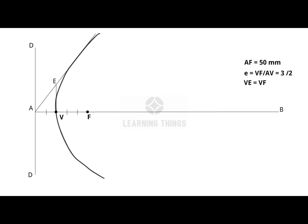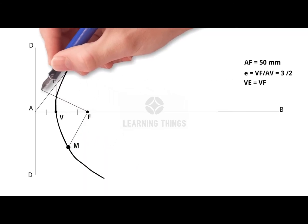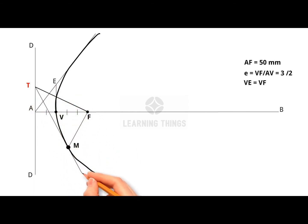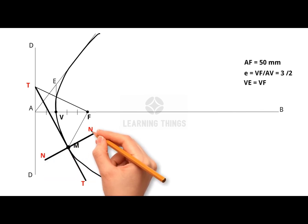To draw tangent and normal to the parabola, locate the point M which is at 30 mm from the directrix. Then join M to F and draw a line through F perpendicular to MF meeting the directrix at T. The line joining T and M and extended is the tangent. Draw a line perpendicular to tangent. The line TT is the tangent and the line NN is the normal to the curve.